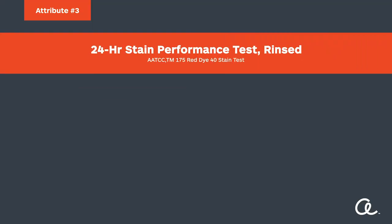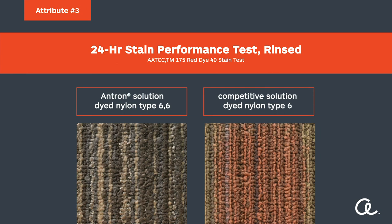Let's take a look at the industry standard method of stain testing. We use the American Association of Textile Chemists and Colorists, or AATCC, TM-175 test method — also known as the Red Dye 40 test — to determine stain resistance. We take a nylon type 6-6 and type 6 solution-dyed carpet sample. The Antron solution-dyed sample utilizes stain resistance built into the polymer, while the nylon type 6 sample utilizes a topical application. Samples are first hot water extracted twice, according to AATCC-TM-171 protocols, to demonstrate the temporary protection that topical stain treatments provide.